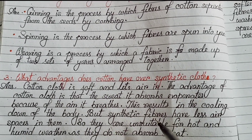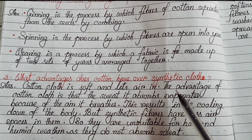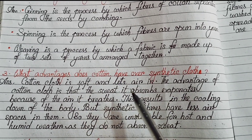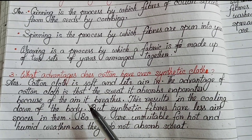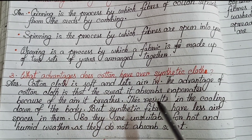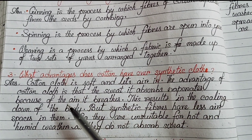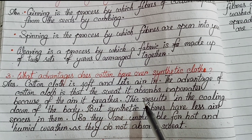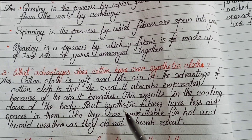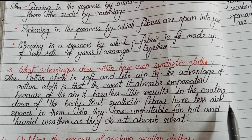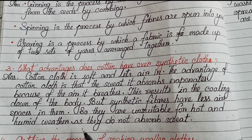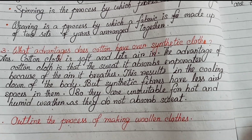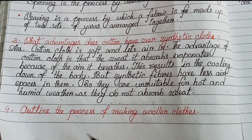Number 3: what advantages does cotton have over synthetic cloth? Cotton cloth is soft and lets air in. The advantage of cotton cloth is that the sweat absorbed evaporates because of the air it breathes, which results in the cooling down of the body. But synthetic fibers have less air space in them, so they are unsuitable for hot and humid weather as they do not absorb sweat.